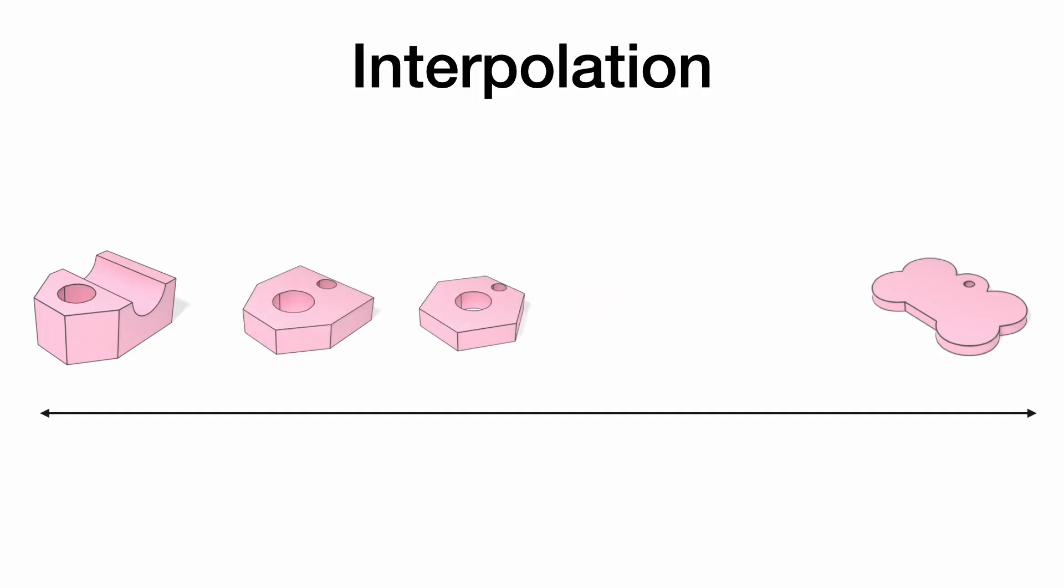More interestingly, we show that given two B-reps, we can interpolate between them, even when their topologies differ.